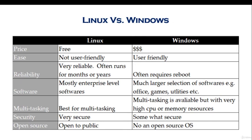Open source: Linux is open to the public. The code is out there — you can modify the code and come up with your own operating system. Whereas with Windows, you cannot do anything like that. It is owned by Microsoft; you cannot have the code open or revealed to anyone.